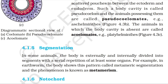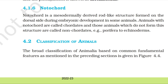Topic 4.1.5: Segmentation. In some animals, the body is externally and internally divided into segments with a serial repetition of at least some organs. For example, in earthworm, the body shows this pattern called metameric segmentation and the phenomenon is known as metamerism. Topic 4.1.6: Notochord. Notochord is a mesodermally derived rod-like structure formed on the dorsal side during embryonic development in some animals. Animals with notochord are called chordates and those which do not form this structure are called non-chordates — examples: Porifera to Echinoderms.